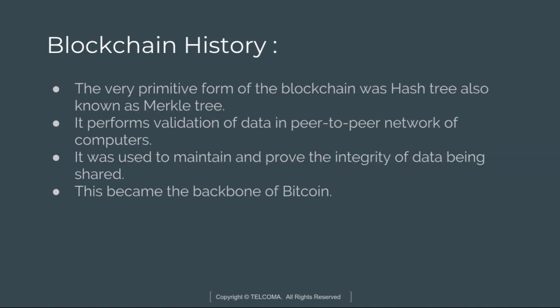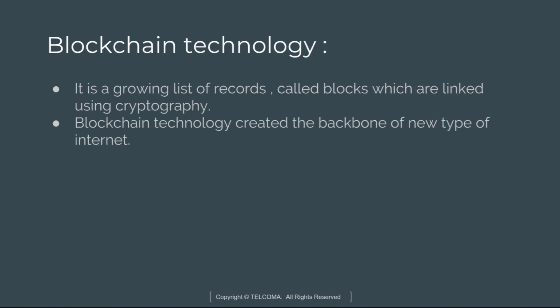In 2008, Satoshi Nakamoto conceptualized the distributed blockchain. It would contain a secure history of data exchanges, utilize a peer-to-peer network to timestamp and verify each exchange, and could be managed autonomously without a central authority. This is the blockchain that underlies the world of cryptocurrencies.